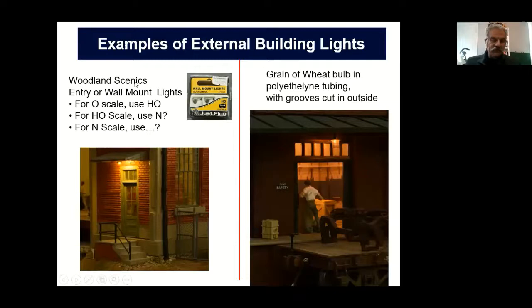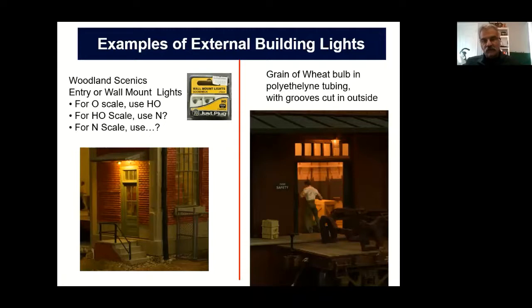This is an example of an external building light. There is a very nice selection through both Woodland Scenics and Walther's of entries and wall mounts. These are the gooseneck lamps that Woodland Scenics sells. I find the O-scale ones are too big, so I use HO ones. If you're in HO scale, I would use N-scale for those. If you want to use a grain of wheat bulb, I insert it in a piece of polyethylene tubing with grooves cut in the outside. This tubing is used to guide control rods and linkages in remote control model airplanes, so it's easy to find — about an eighth-inch OD and maybe a sixteenth-inch ID.